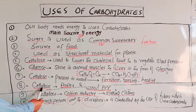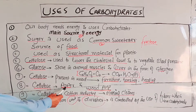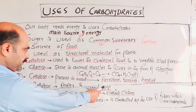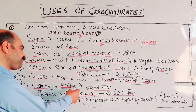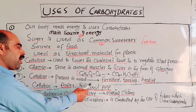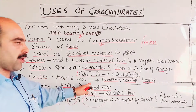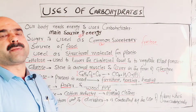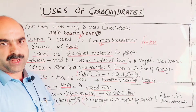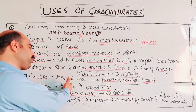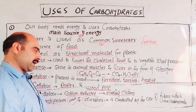Cellulose is also used for making paper and wood pulp. Wood pulp is the internal portion of wood, and from it we make paper.